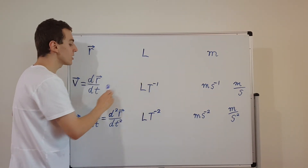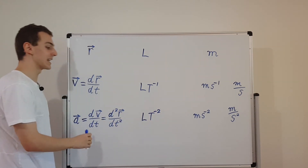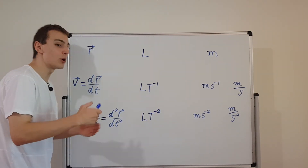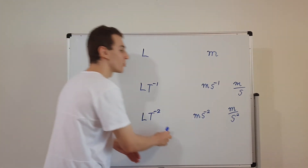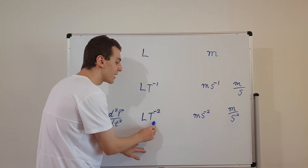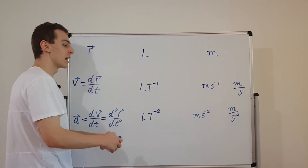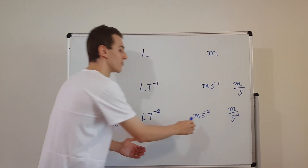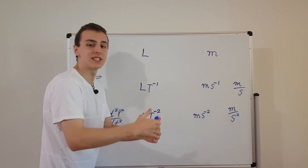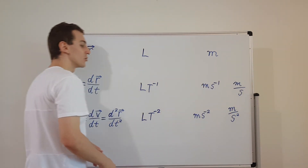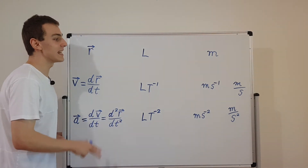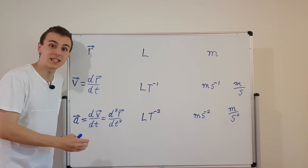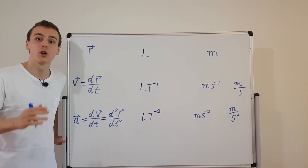The most important takeaway message from this video are these units: position has units of length, velocity is length per time, and acceleration is length per time squared, or length per time per time. That is what happens when you differentiate with respect to time twice — you introduce two factors of time in the denominator. So you have meters per second squared, or meters per second per second, in the SI unit system. This is what we're going to be using in the next few videos when we do dimensional analysis on the expressions for velocity and acceleration in polar coordinates.